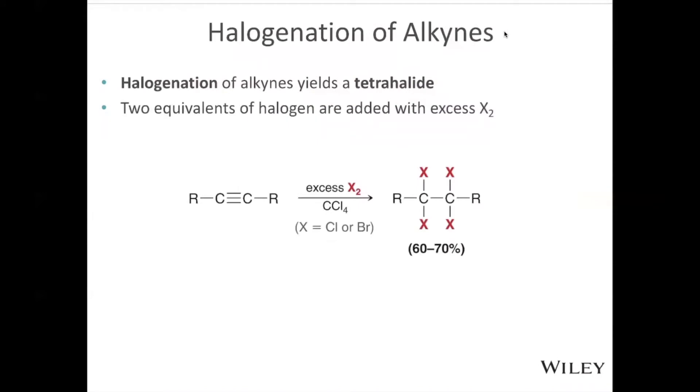Halogenation of alkynes is the next reaction. Remember with the alkene, we added Br2, and we get two Brs added. Well, with the alkyne, we end up adding four. So we have this tetrahalide product. This works with chlorine and bromine.